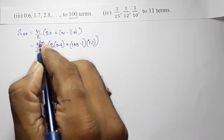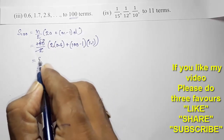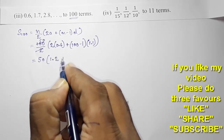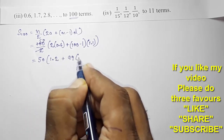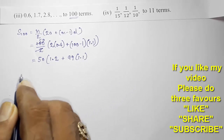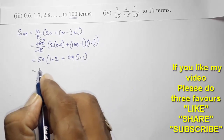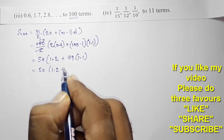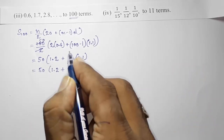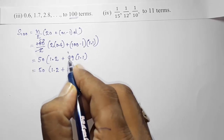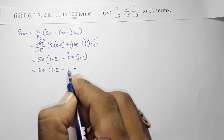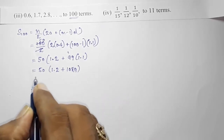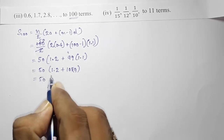After simplification, 100/2 = 50. So S100 = 50 × (2×0.6 + 99×1.1) = 50 × (1.2 + 108.9). For 99 × 1.1: 99 × 11 = 1089, and placing the decimal gives 108.9.